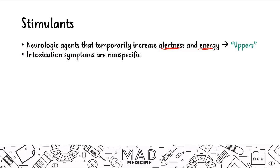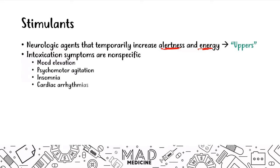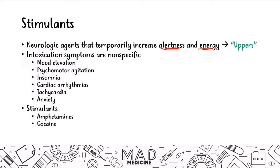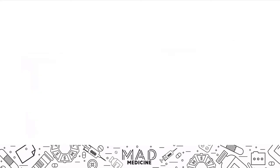The symptoms of stimulant intoxication are going to be mood elevation, psychomotor agitation, insomnia, cardiac arrhythmias like tachycardia, and anxiety. There are four stimulants you need to know for Step 1: amphetamines, cocaine, caffeine, and nicotine. Let's dive deep into amphetamines first because that's very, very high yield.